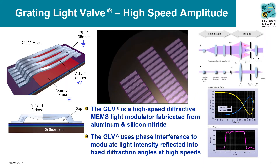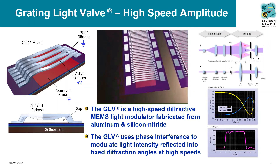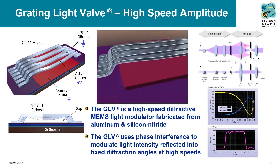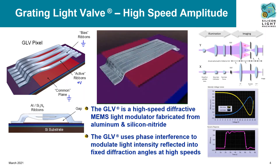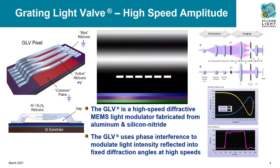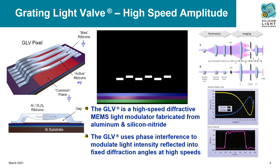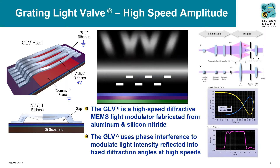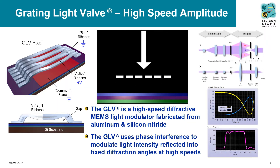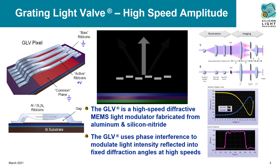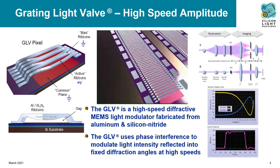The grading light valve, or GLV, is a ribbon-based diffractive technology for high-speed true grayscale amplitude modulation with high power handling for UV to NIR applications. Aluminum silicon nitride ribbons are electrostatically actuated to create diffraction grating pixel elements. Inactive ribbon elements act as a mirror. By deflecting every other ribbon, light is diffracted into a first order. Varying the deflection diverts more or less light, acting as a light valve. Amplitude modulation is achieved by allowing only the first or zeroth order; an example of zero-order filtering is shown on the top right.